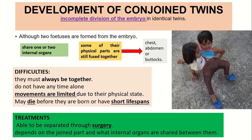The difficulties faced by conjoined twins include always having to be together with no privacy, limited movement, and the risk of dying before birth or having a short lifespan. As a treatment, they can be separated through surgery, depending on the joined parts and which internal organs are shared between them.